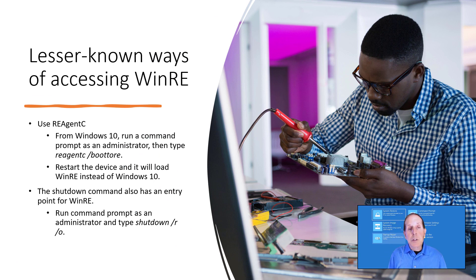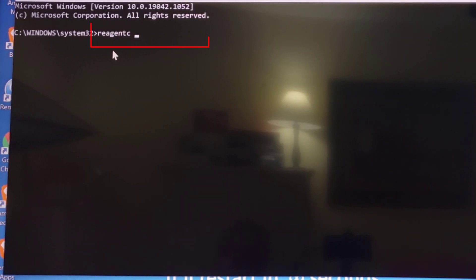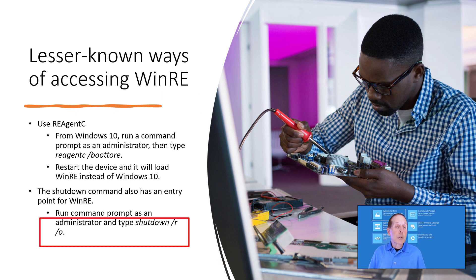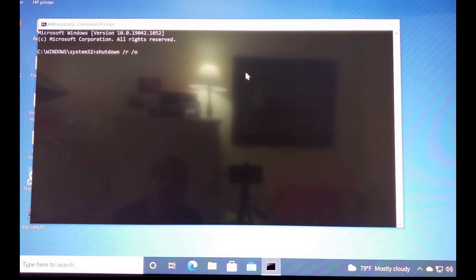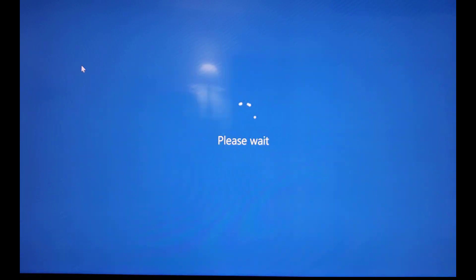There are a couple of lesser-known ways to access WinRE. One is using an administrative command prompt and typing reagentc /boottore, then restarting — you'll boot into Windows RE. Another way is using an elevated command prompt and running shutdown /r /o. I used both methods on a virtual machine and neither would work; I went to my industrial workstation and both worked. So add /t 0 and it will reboot right away and right into Windows Recovery.